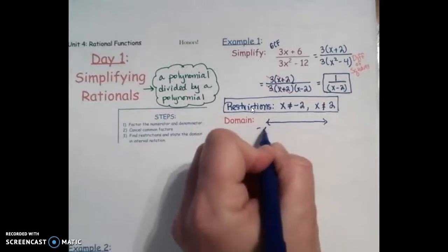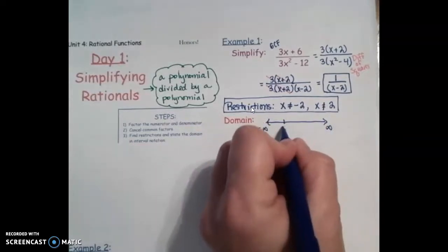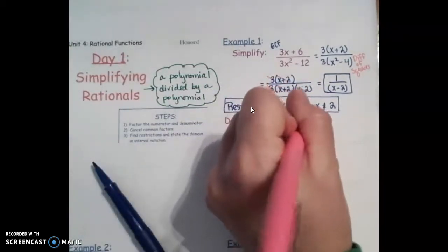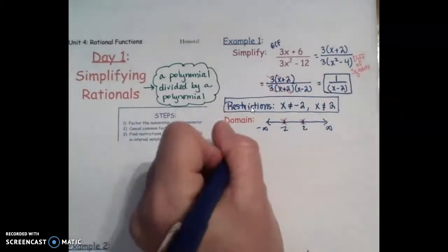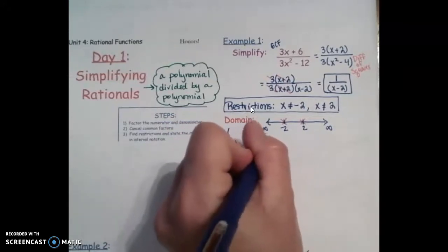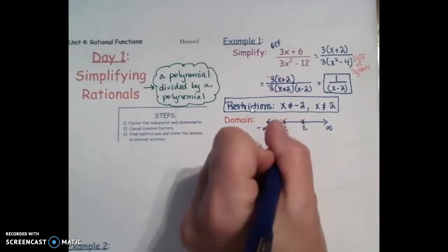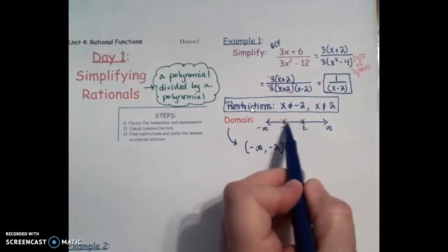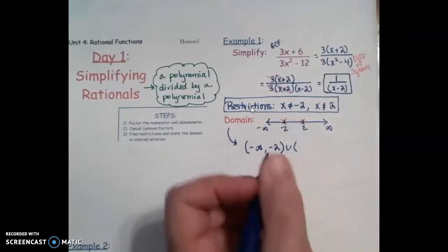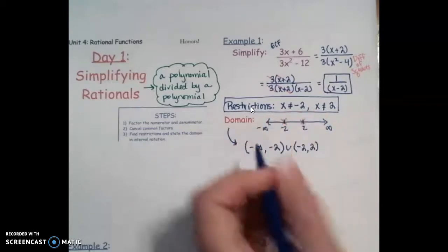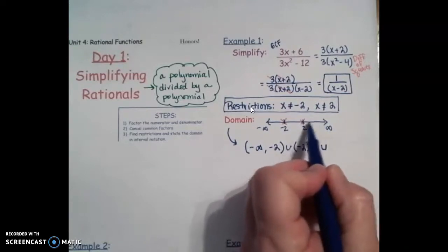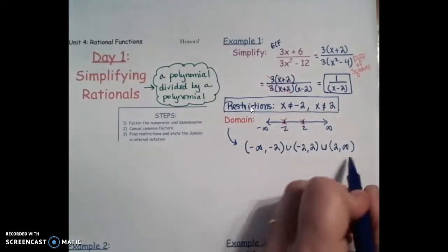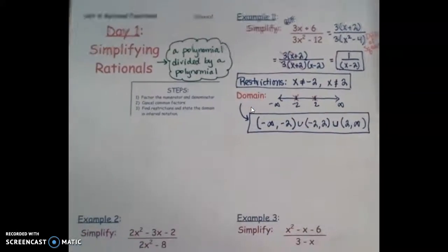And here, if I put positive 2, 2 minus 2 would give me 0. So x cannot be positive 2. So here's my restrictions, and you're going to use your restrictions to help you write your domain of this function. I can put any value in for x except for negative 2 and positive 2. Think about a number line. We have negative infinity, positive infinity, negative 2, positive 2. It can be any number except those two that I've crossed out. So you're going to write your domain: negative infinity all the way to negative 2, using a parenthesis because negative 2 can't be included. Now I need to take care of all these numbers between negative 2 and positive 2. And I need to consider all the numbers from 2 to infinity. So that would be how we write our domain in interval notation.